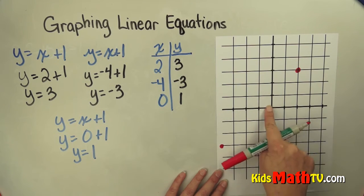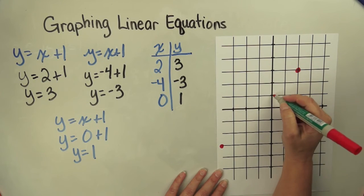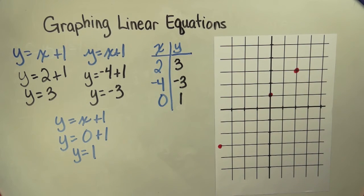And 0 means that I don't move on the x-axis. Positive 1 means I go up 1. So 0, positive 1.